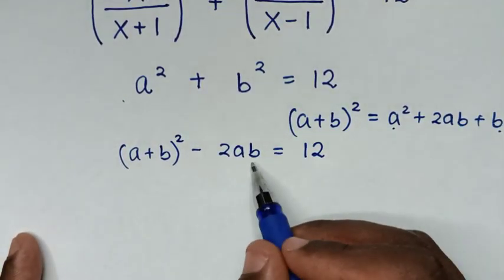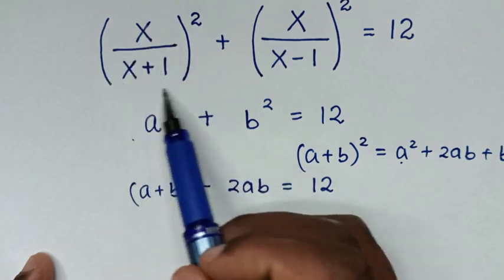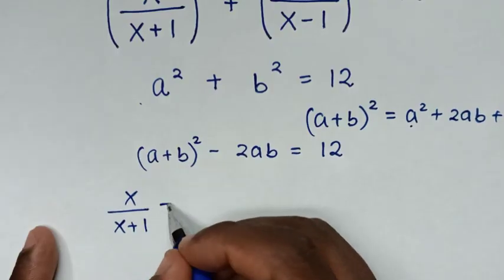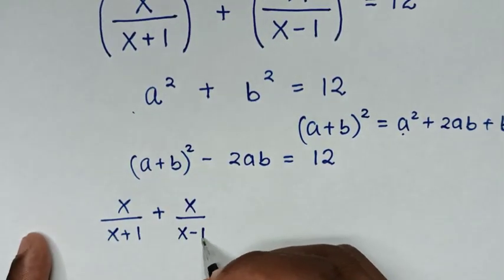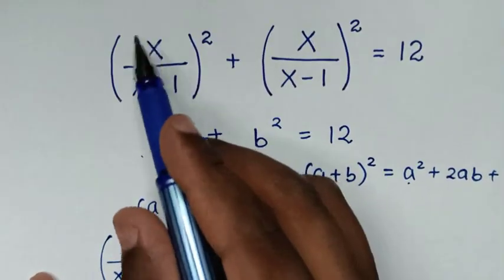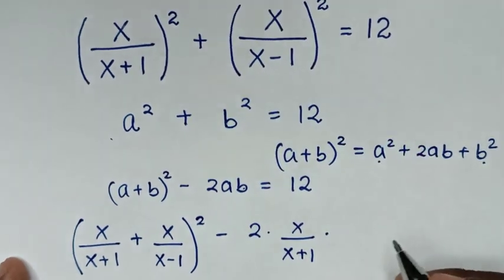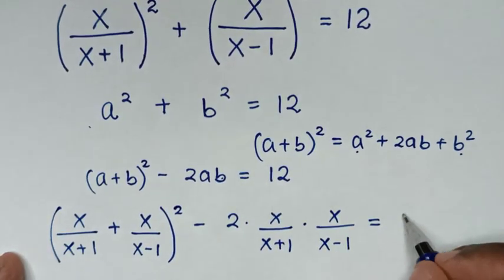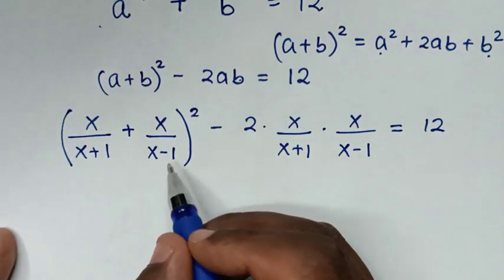In the next step, we substitute the values of a and b. So a = x/(x+1) and b = x/(x-1). The expression becomes (x/(x+1) + x/(x-1))² - 2·(x/(x+1))·(x/(x-1)) = 12. The LCM of (x+1) and (x-1) is (x+1)(x-1).